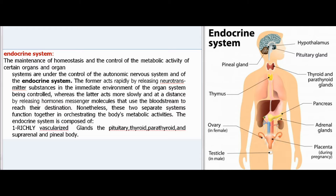The endocrine system: the maintenance of homeostasis and the control of the metabolic activity of certain organs and organ systems are under the control of the autonomic nervous system and of the endocrine system. The former acts rapidly by releasing neurotransmitter substances in the immediate environment of the organ system being controlled, whereas the latter acts more slowly and at a distance by releasing hormones — messenger molecules that use the bloodstream to reach their destination.